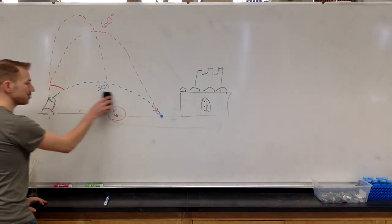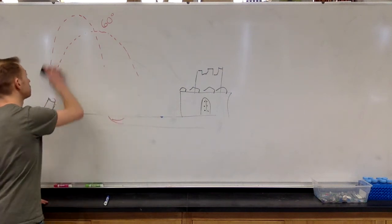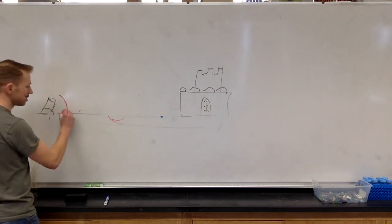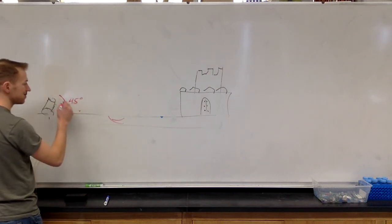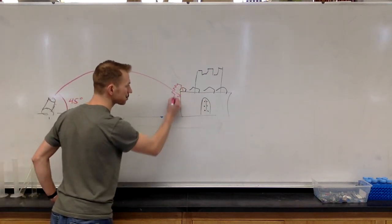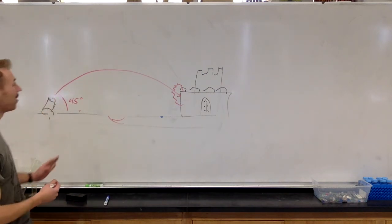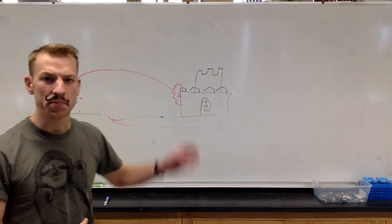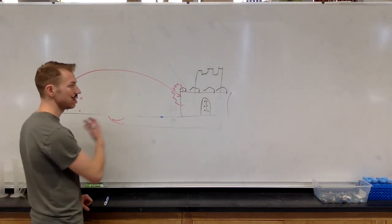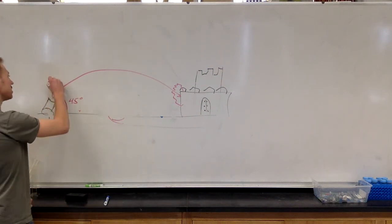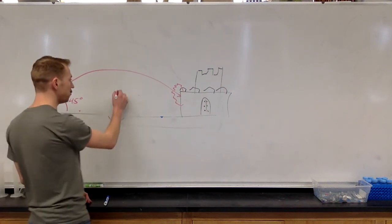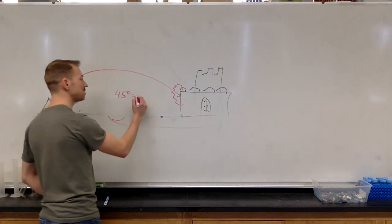The optimum angle to launch any projectile, I'm sure that you guys can actually guess, is 45 degrees. 45 degrees makes it so that our velocity upward is exactly the same as our velocity outward. So our horizontal velocity and our vertical velocity are the same, giving us our largest range. So 45 degrees is our optimum range.